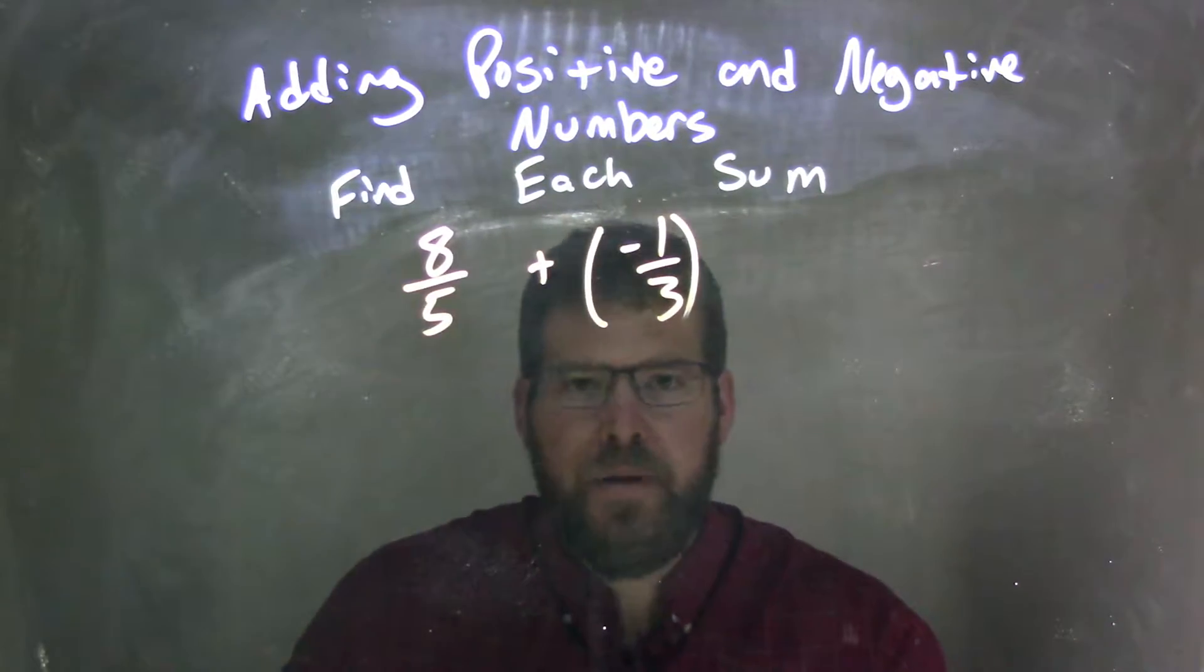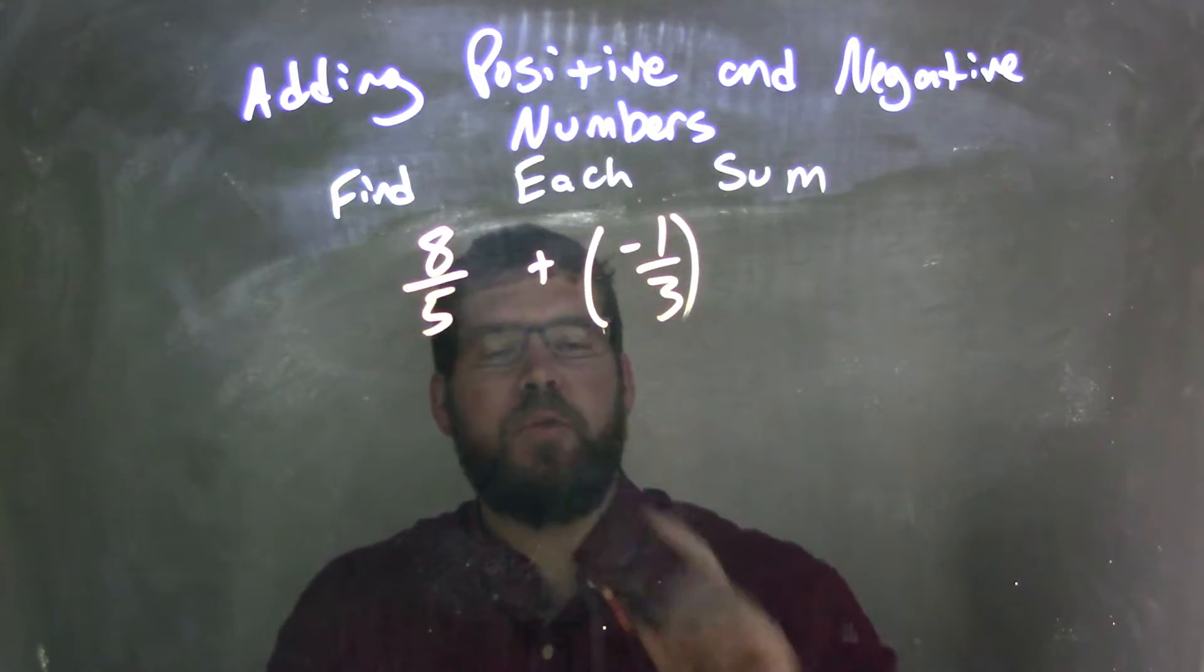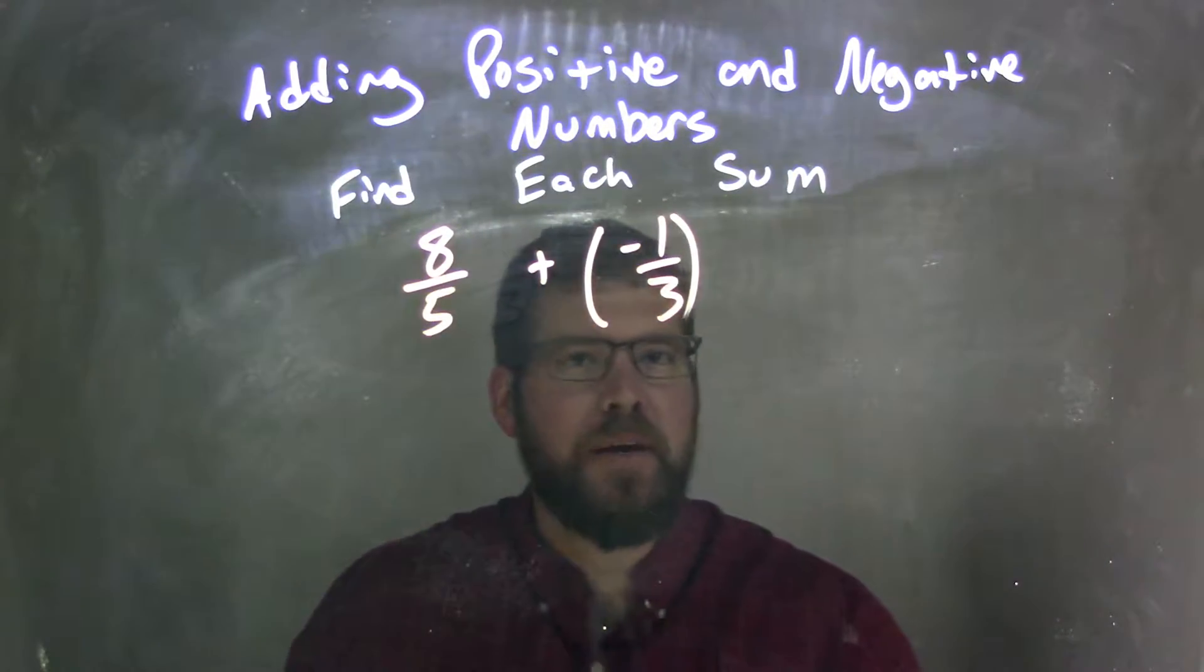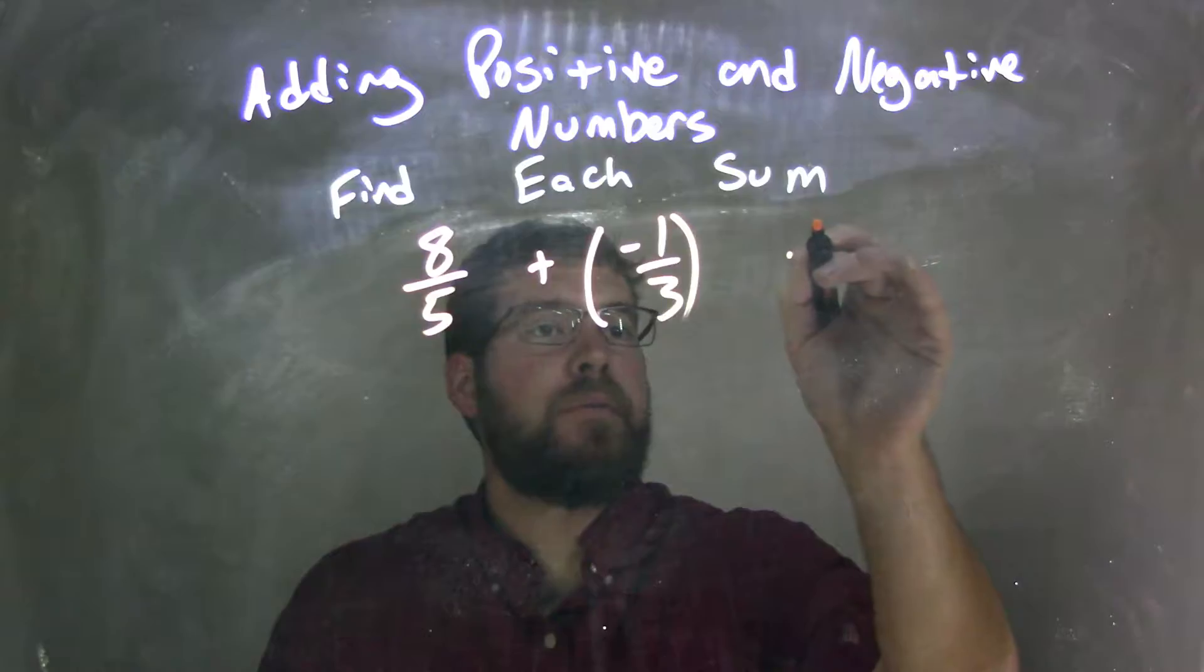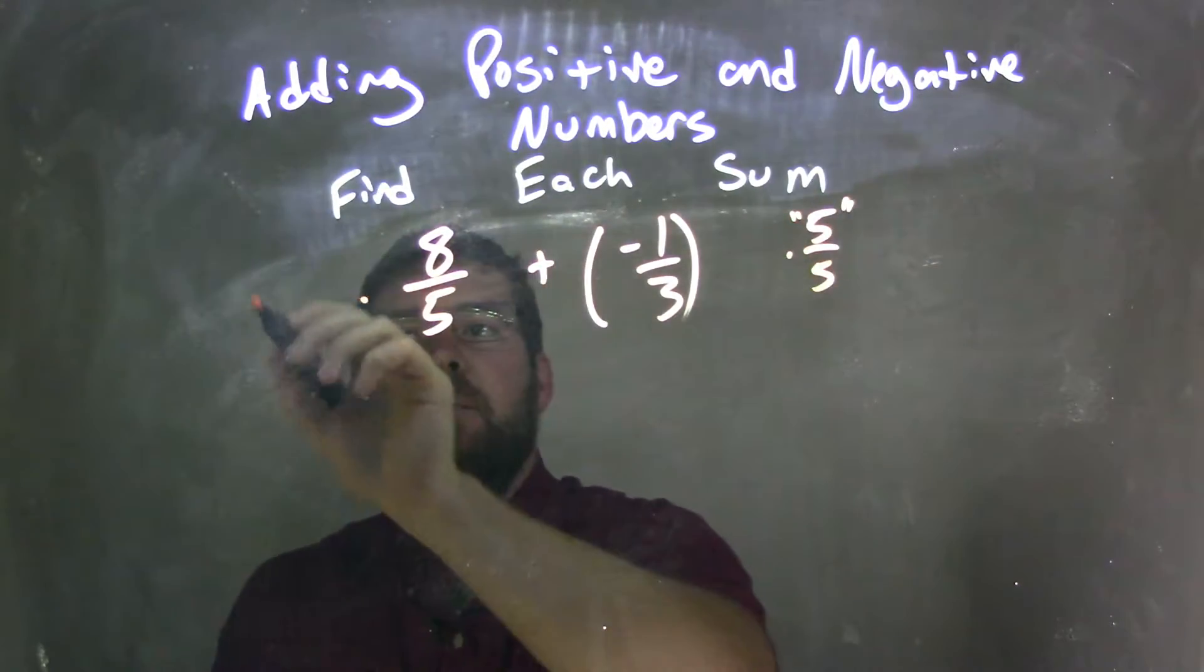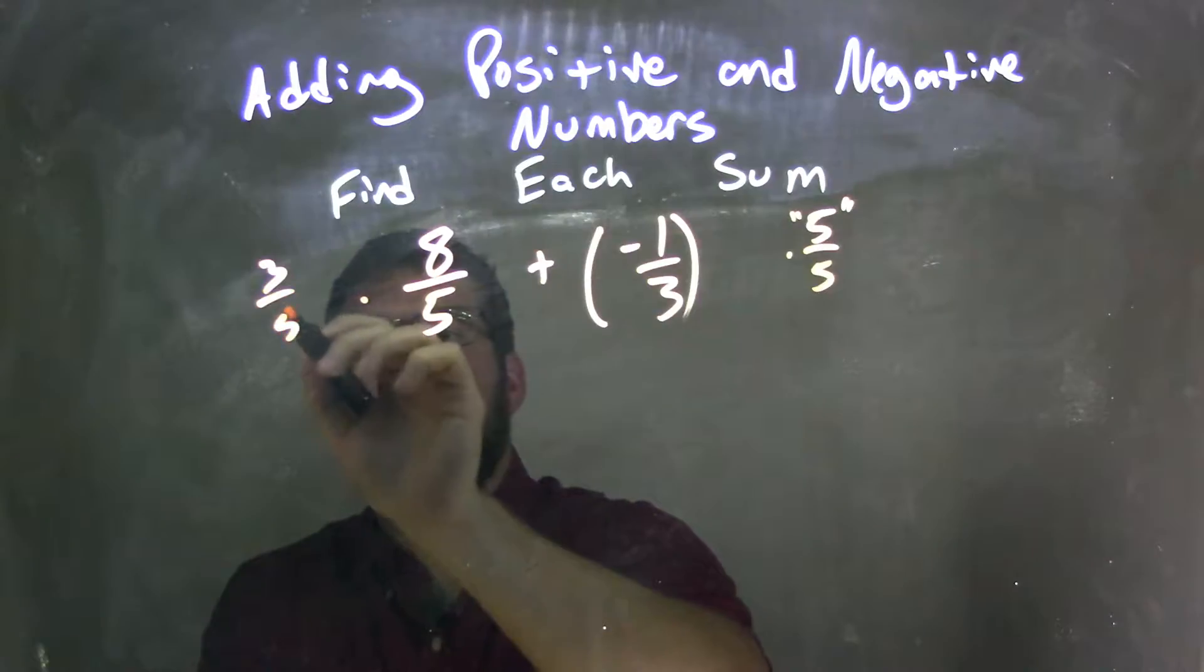Well, I need to find a common denominator. Now I know 5 and 3 both go into 15, 3 goes 5 times. So I'm going to multiply this by 5 over 5, and this side by 3 over 3.